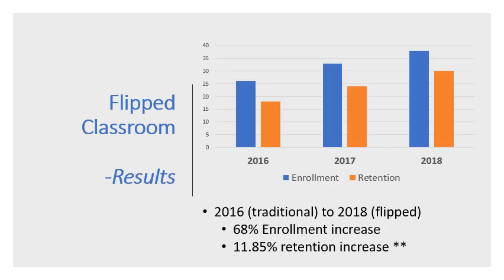With fully implementing a flipped classroom for the 2017 cohort and creating scheduling options, enrollment into the paramedic program increased 21% in relation to the 2016 cohort. Cumulatively for the 2017 and 2018 cohorts, there has been a 68% increase in enrollment since the implementation of the flipped classroom, compared to the traditional 2016 cohort of 12 hours of face-to-face classroom time per week.